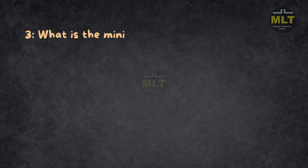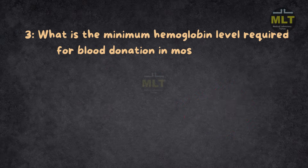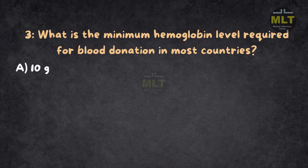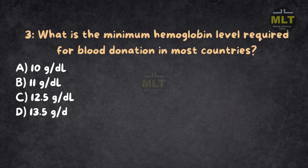Question 3: What is the minimum hemoglobin level required for blood donation in most countries? Option A: 10 g/dL. Option B: 11 g/dL. Option C: 12.5 g/dL. Option D: 13.5 g/dL. Correct answer: C, 12.5 g/dL.